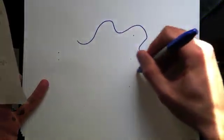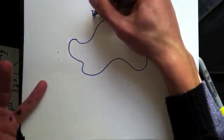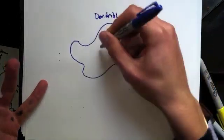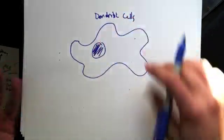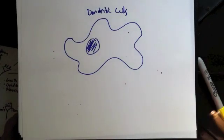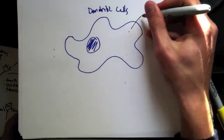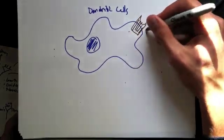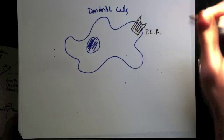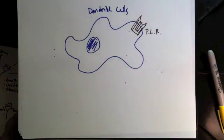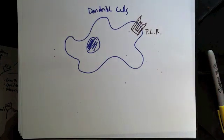So one of the major cells of the innate immunity are dendritic cells. And something that dendritic cells, along with other cells of the innate immune system have, are these things called toll-like receptors. So this is a toll-like receptor. And toll-like receptors just generally recognize foreign things in the body. They're not as specific as antibodies, but they do a pretty good job of recognizing foreign material.